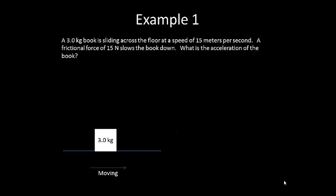So let's do three example problems. The first example, a three kilogram book is sliding across the floor at a speed of 15 meters per second. A frictional force of 15 newtons slows the book down. What is the acceleration of the book? So first, write down what you're trying to find. We're looking for the acceleration. Draw a free body diagram. So we have weight acting down, normal force acting up that's counteracting the weight, and our frictional force.